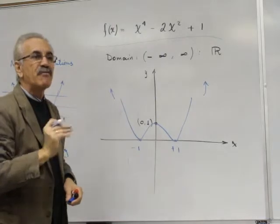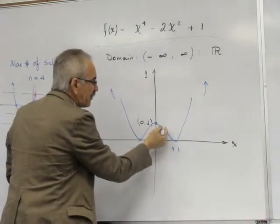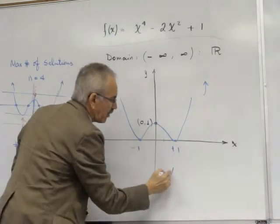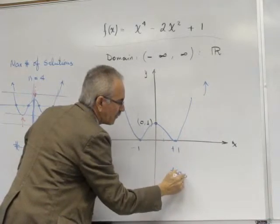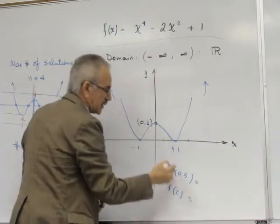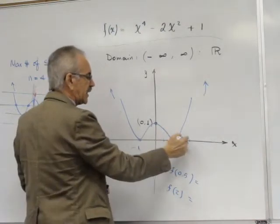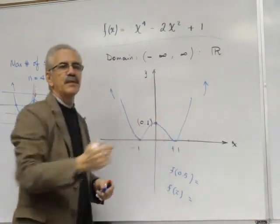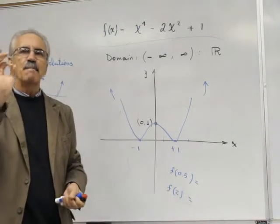If I want perfect graph, I can verify using the value of the function in 0.5 for example, in 2, f in 2, et cetera. I can test two, three, four points in order to get exact picture.